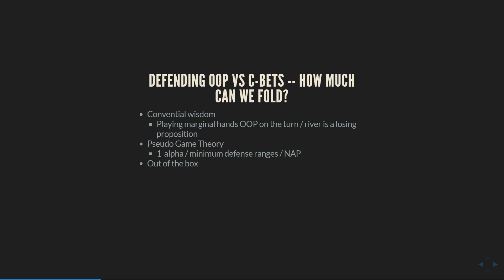Finally, people have always been curious about some out-of-the-box options. One of the biggest ones is maybe you should be donk betting. Maybe GTO play is very complicated, having you use both a balanced donking range and a balanced checking range. GTO Range Blitter will let us take a look at that as well. The goal of this strategy pack is to give definitive answers to these questions — take a look at specific real world situations, compare solutions to theory predictions, and see that doing a one-minus-alpha defense on standard boards is actually going to be a huge mistake that costs a lot of EV. We'll look at why that is, how we can adapt the theory, understand the GTORB solutions, and apply them to win more money.